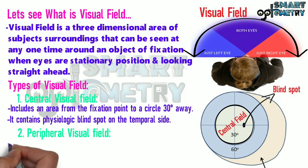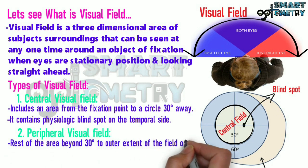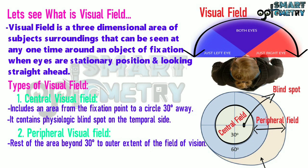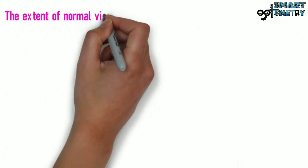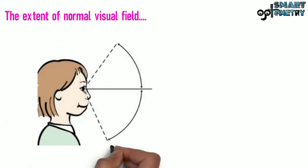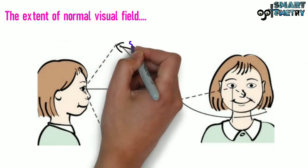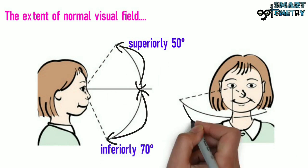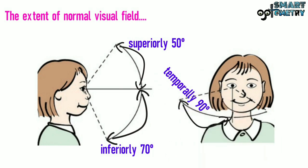The peripheral visual field is the rest of the area beyond 30 degrees to the outer extent of the field of vision. Here, around the central field, you can see the extent of the peripheral field. The extent of the normal visual field is superiorly 50 degrees, inferiorly 70 degrees, temporally 90 degrees, and nasally 60 degrees.